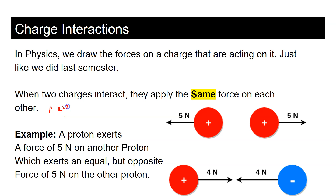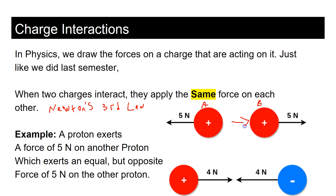For example, a proton exerts five newtons on another proton, which then exerts an equal and opposite force of five newtons back. We'll call them proton A and proton B. Proton A is exerting five newtons on proton B, pushing it to the right. Meanwhile, proton B is applying a force in the opposite direction. We label these as 'B on A' and 'A on B.'